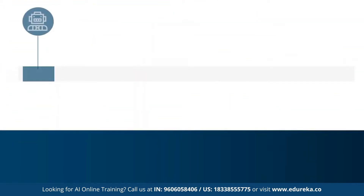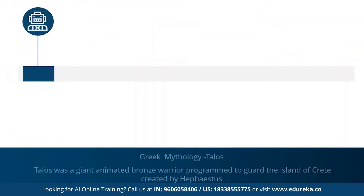The concept of AI goes back to the classical ages. Under Greek mythology, the concept of machines and mechanical men were well thought of. An example is Talos — a giant animated bronze warrior who was supposedly programmed to guard the island of Crete.